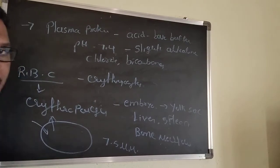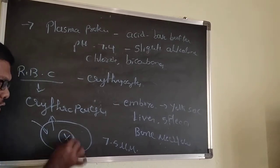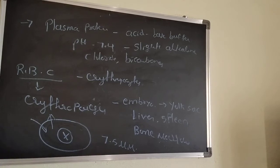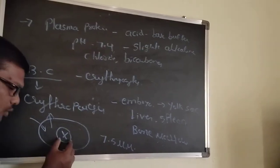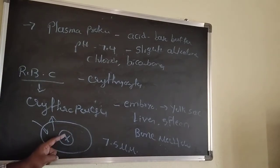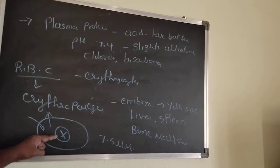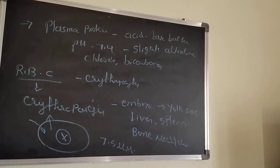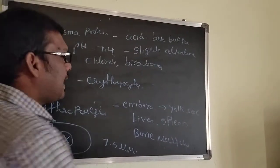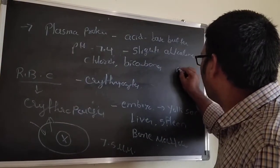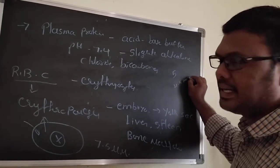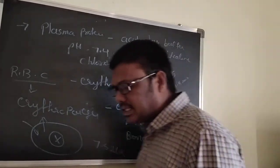In matured RBC there is no nucleus. If the nucleus were present it would occupy more portion in the cell, so by removing it, more hemoglobin can be present in the RBC. Per cubic millimeter, RBC count is 5 million for males and 4.5 million for females.